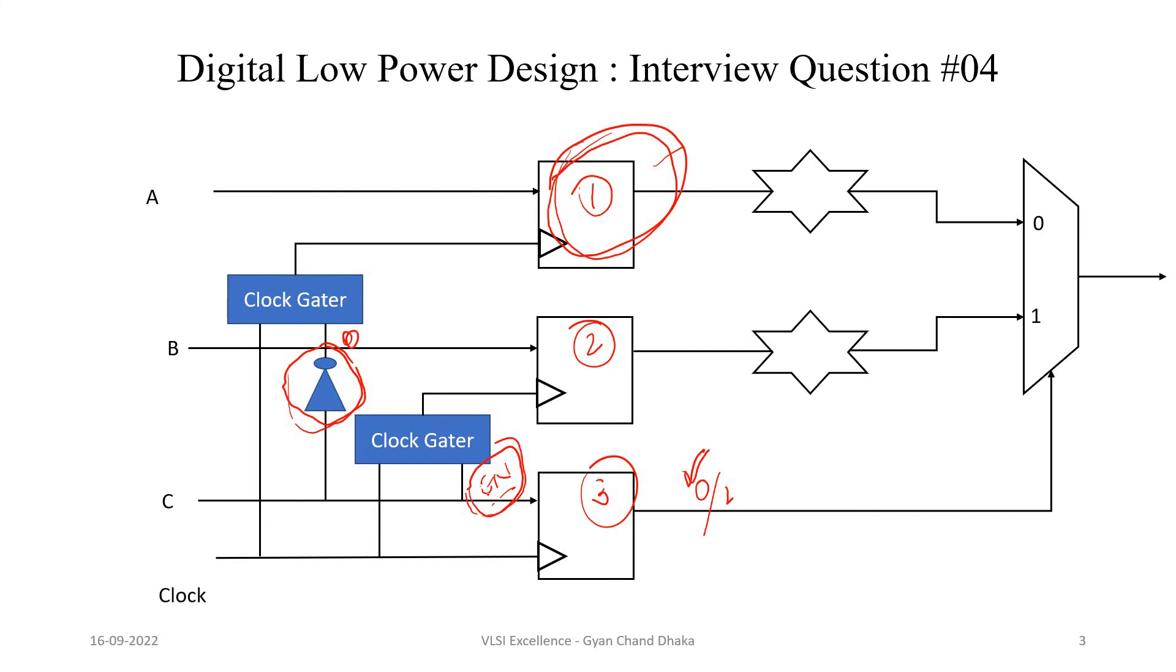And whenever our enable signal is high—so here the enable signal is nothing but our input signal for flip-flop 3—so whenever the enable signal is high, that means flip-flop 2 output will be selected, and in that case, we have to ungate the clock for flip-flop 2 and we have to gate the clock for our flip-flop 1. So to gate the clock for flip-flop 1 when the enable signal is high, we have to apply one extra NOT gate here which will make sure that our clock gater will gate the clock for our flip-flop 1.